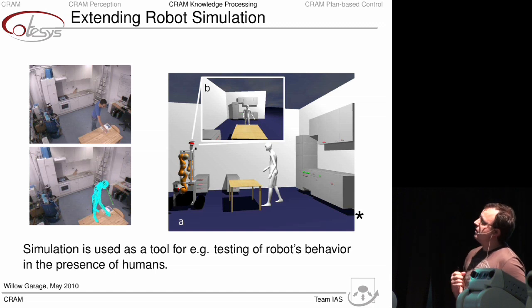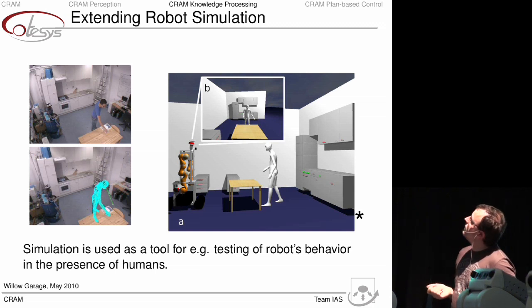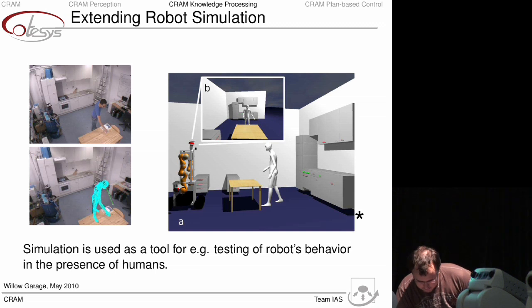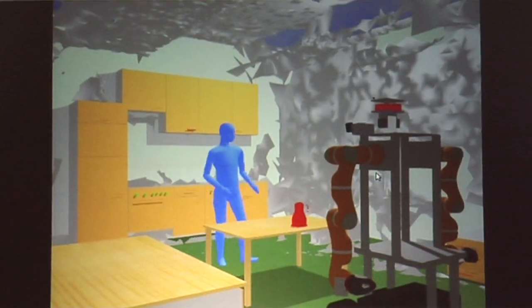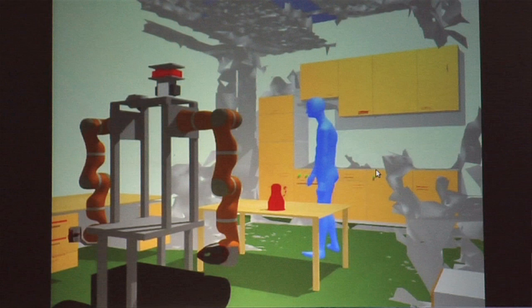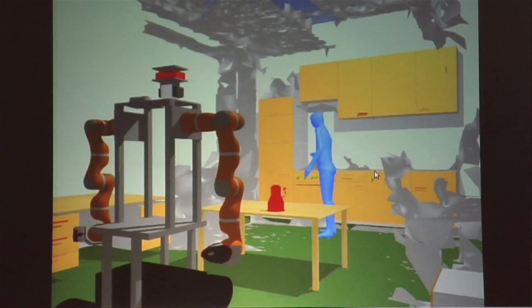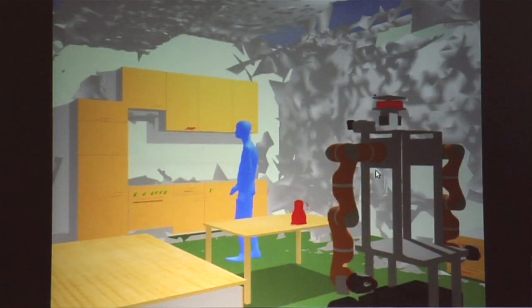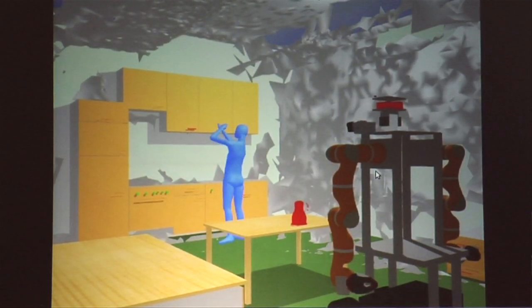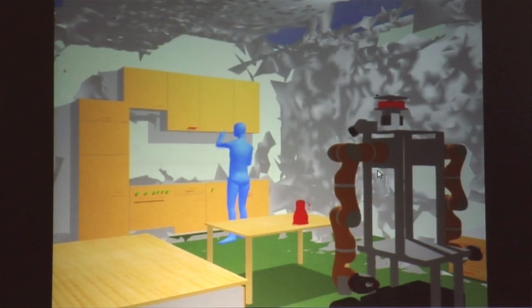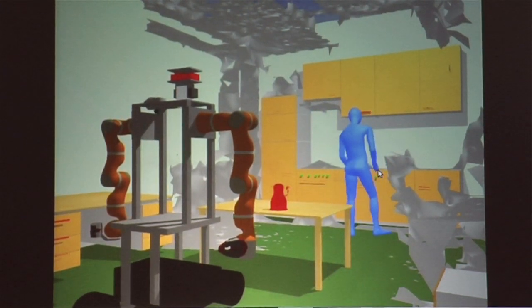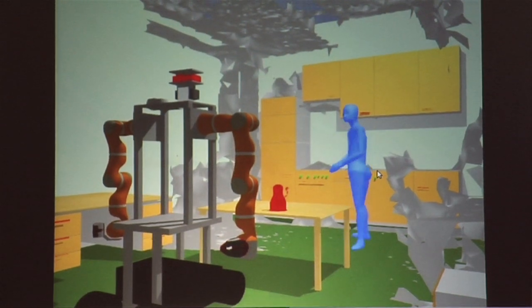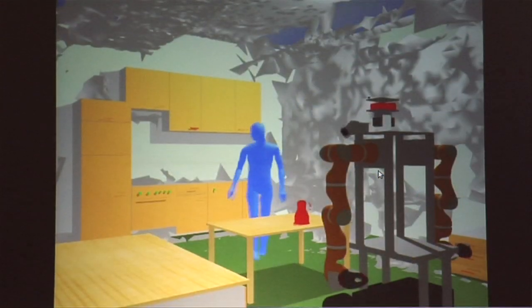Last but not least, we are also working on simulation. Here I have an example from my colleague Mihai Dolha, who created a human model in the simulation and played back the movements of a human captured previously with our markerless human motion tracker. This can be used to test human-robot interaction in simulation before deploying it in a real scenario. This is not yet in ROS, but Mihai is currently working to port it back.